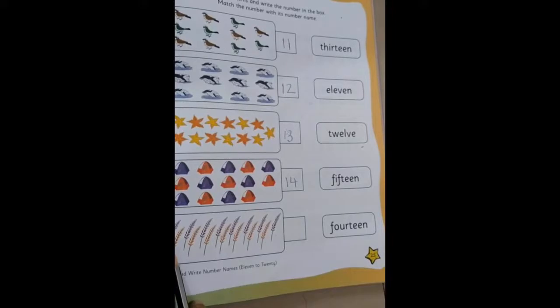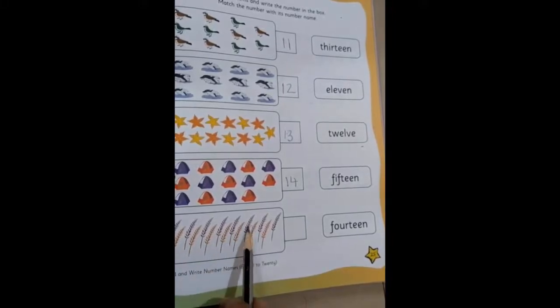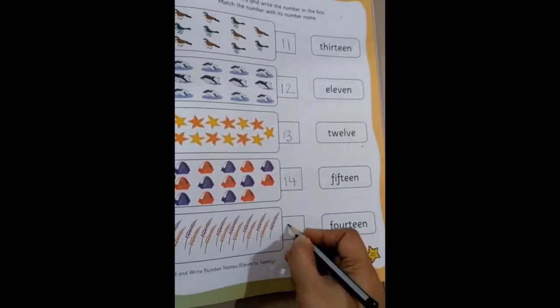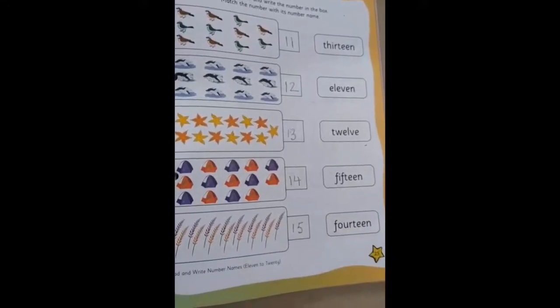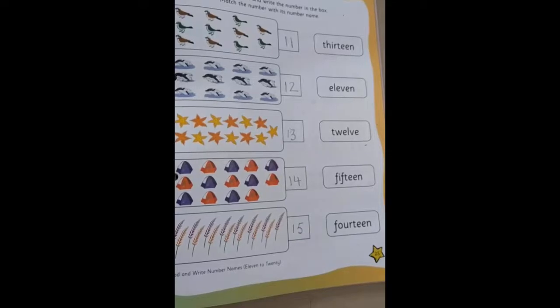Then how many ferns are there? 1, 2, 3, 4, 5, 6, 7, 8, 9, 10, 11, 12, 13, 14, and 15. So we write 15. We have now counted and written the objects. Now we move on to the next part: matching it with the number names.